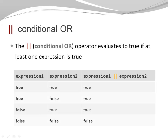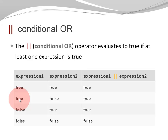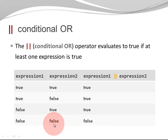The conditional OR operator evaluates to TRUE if at least one expression is TRUE. In most cases, expression 1 OR expression 2 evaluates to TRUE — it is good enough if one of the expressions is TRUE. Expression 1 OR expression 2 is FALSE if and only if both expressions are FALSE.